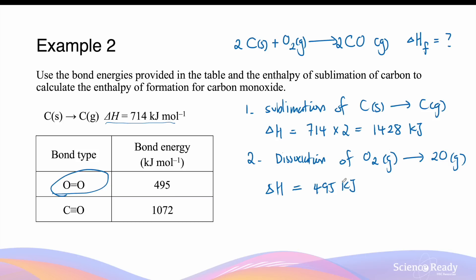Once we have formed gaseous carbon and dissociated oxygen atoms, the third step is the formation of the bond between them — that is, forming the carbon monoxide molecule. The enthalpy change of this reaction will be equal to the bond energy of the carbon-oxygen triple bond between them.